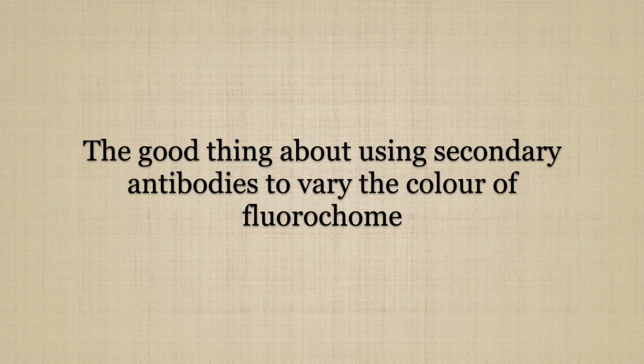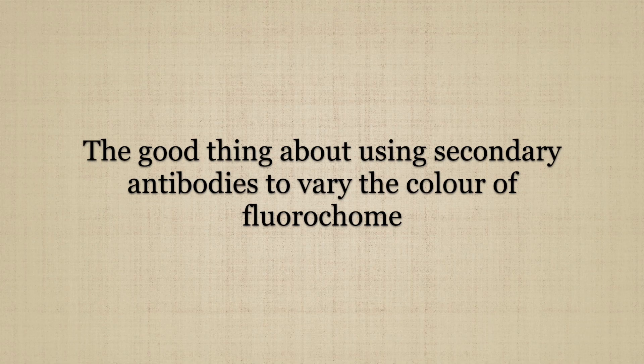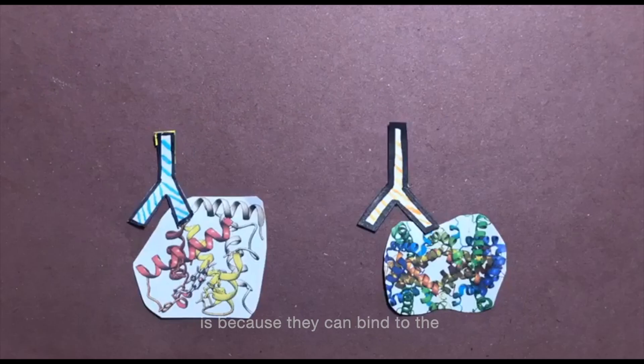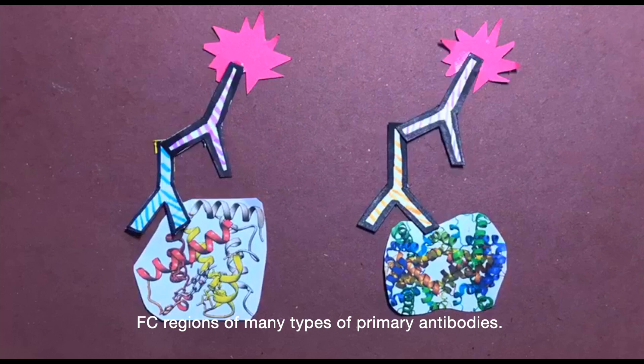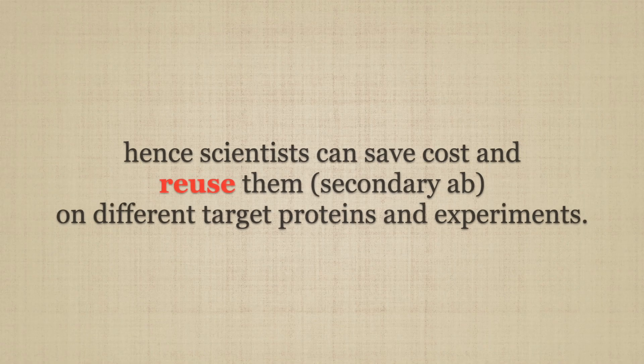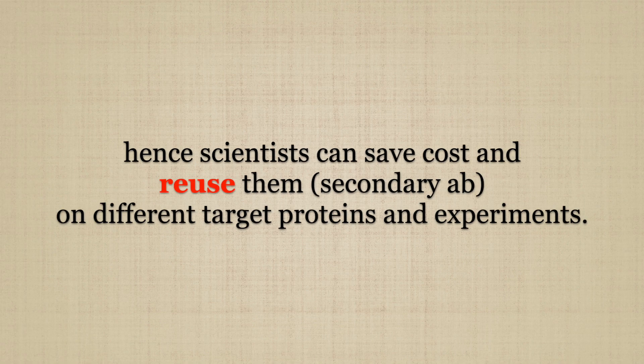The good thing about using secondary antibodies to vary the color of fluorochrome is because they can bind to the FC region of many types of primary antibodies. Hence, scientists can save costs and reuse them on different target proteins and experiments. Without further ado, let's go through the procedures of carrying out immunofluorescence.